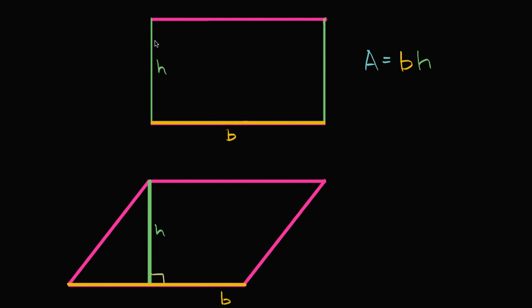We know that we can find the area of a rectangle by multiplying the base times the height — the area of a rectangle is equal to base times height. In another video, we saw that if we're looking at the area of a parallelogram, and we also know the length of a base and we know its height, that the area is still going to be base times height.